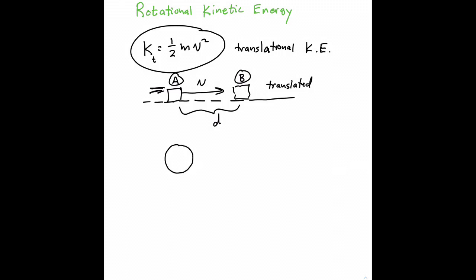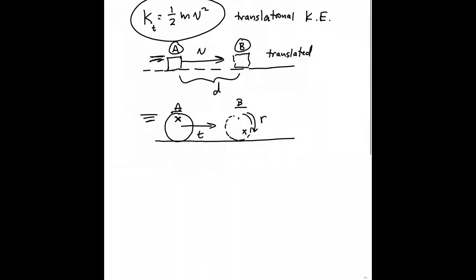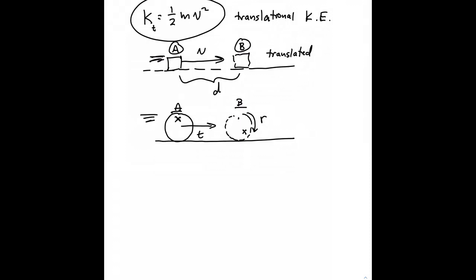For an object that rolls, if the top of the wheel is located here at one moment, and by the time the wheel has traveled from point A to point B, if that spot ends up located here, then the object has both translated and rotated as it's moved from point A to B. So it has a total energy that's equal to the sum of its translational kinetic energy plus its rotational kinetic energy.